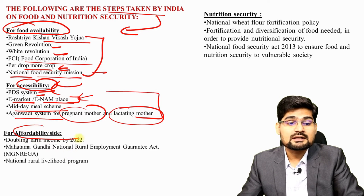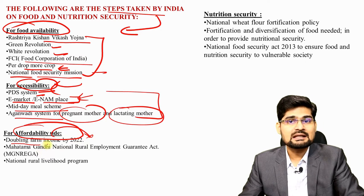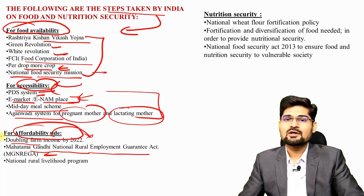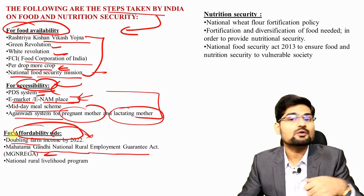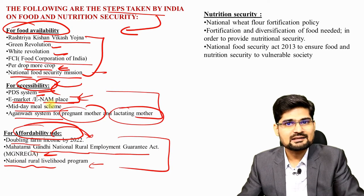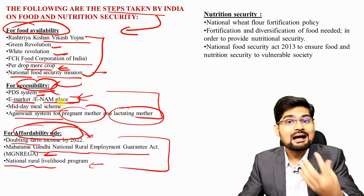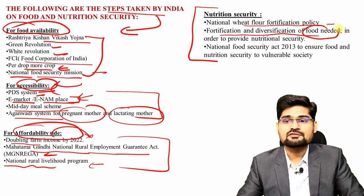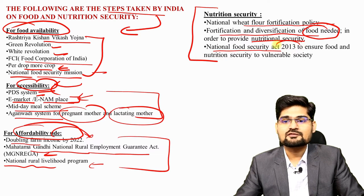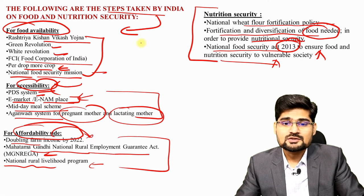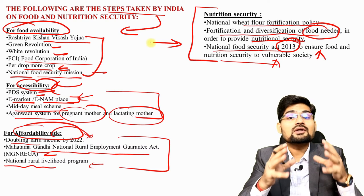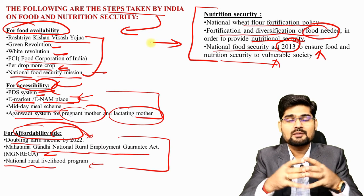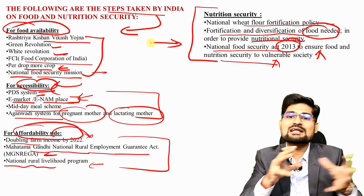For affordability, the current government's idea is doubling farm income and increasing purchasing power parity. The Mahatma Gandhi National Rural Employment Guarantee Act — MGNREGA — guarantees work to laborers so they can earn wages. The National Rural Livelihood Program and several others are integrated to increase the affordability of people so they have money to buy food. For nutrition security, we have the National Wheat Flour Fortification Policy, and fortification and diversification of food. The National Food Security Act of 2013 ensures food and nutrition security to vulnerable sections of society. More integration of nutrition value with food security is still needed.